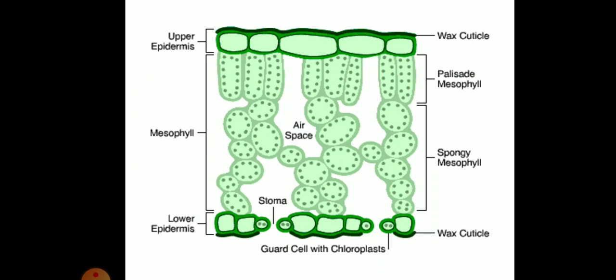In the diagram showing stomatas, you can see chloroplasts are present. The leaf is divided into upper epidermis, mesophyll and lower epidermis. The air space gives pressure on the inner surface of the stomatas, by which they will get open or closed.